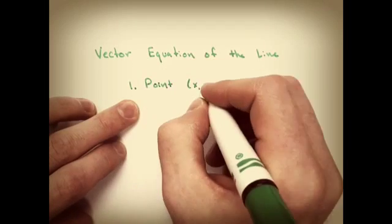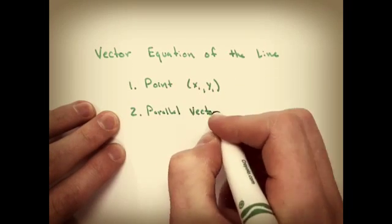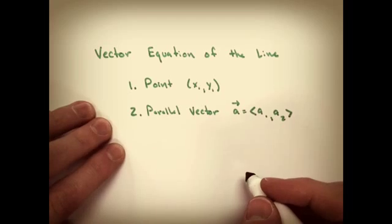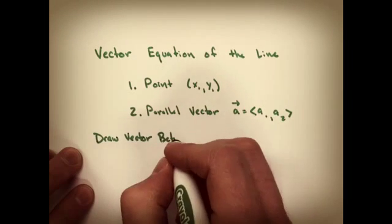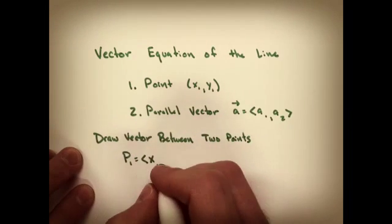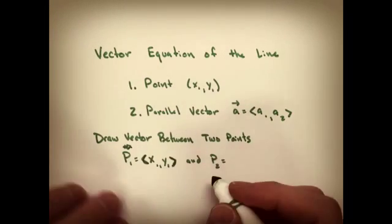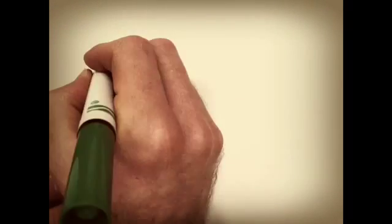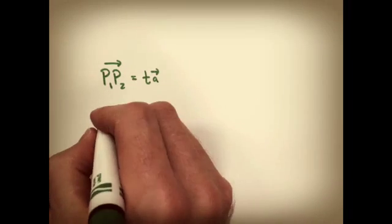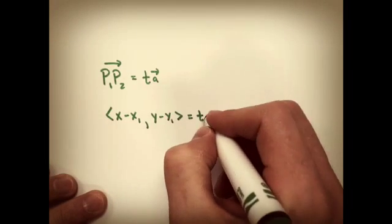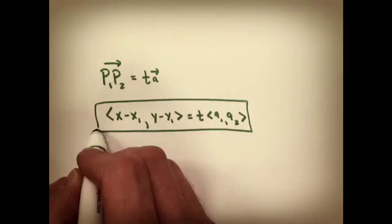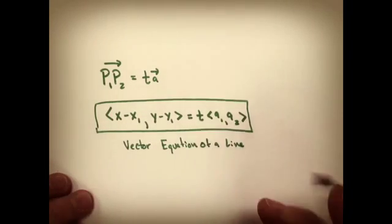You really need two things to write a vector equation of a line. You need a point, and you need a parallel vector. We'll call that parallel vector a. You see that our point 1 is x1, y1, and our point 2 is x2, y2. If you want to write the vector from p1 to p2, you say p1, p2 is some number t times vector a. And that's the vector form of a line.